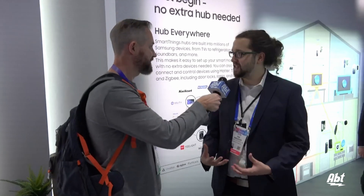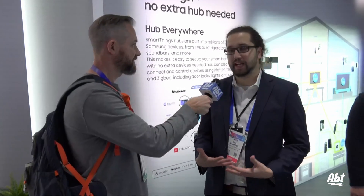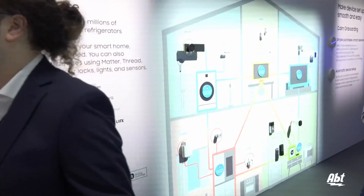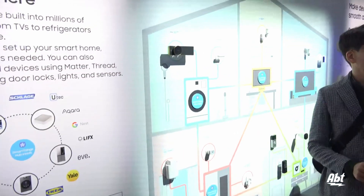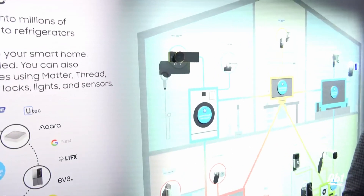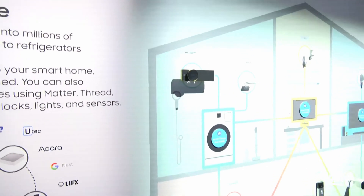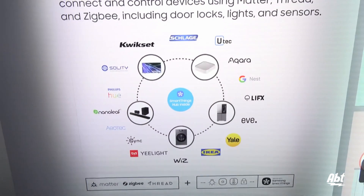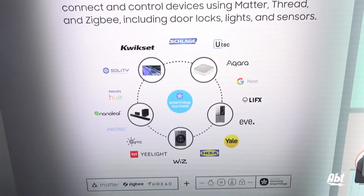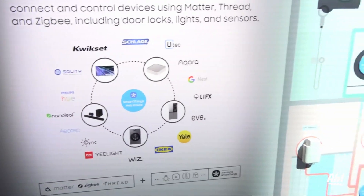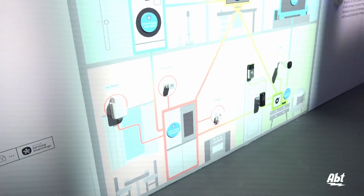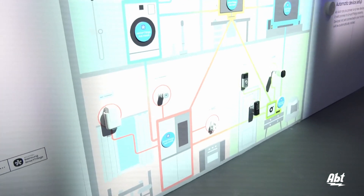We were just talking about how easy Samsung makes it to connect up and control your smart home through SmartThings. One of the things I want to talk about is our hub technology, because that's how smart home works. Every device may speak a different language, and sometimes they can't talk to each other, so you need that universal translator — that hub.